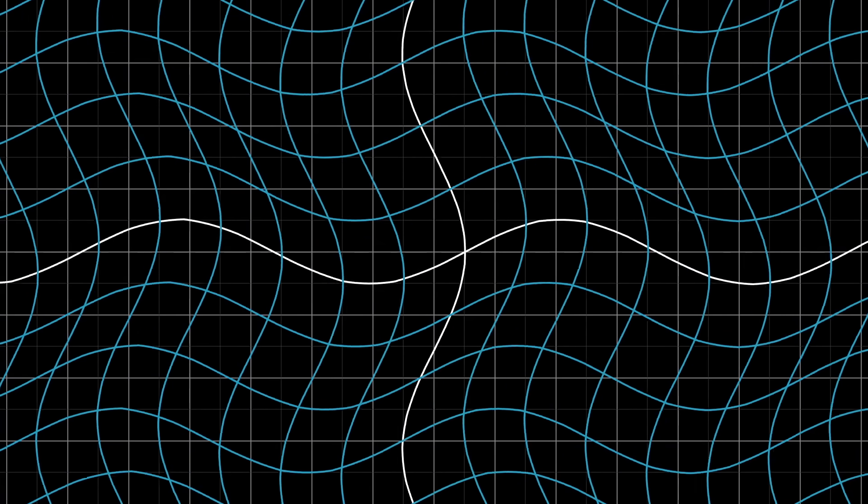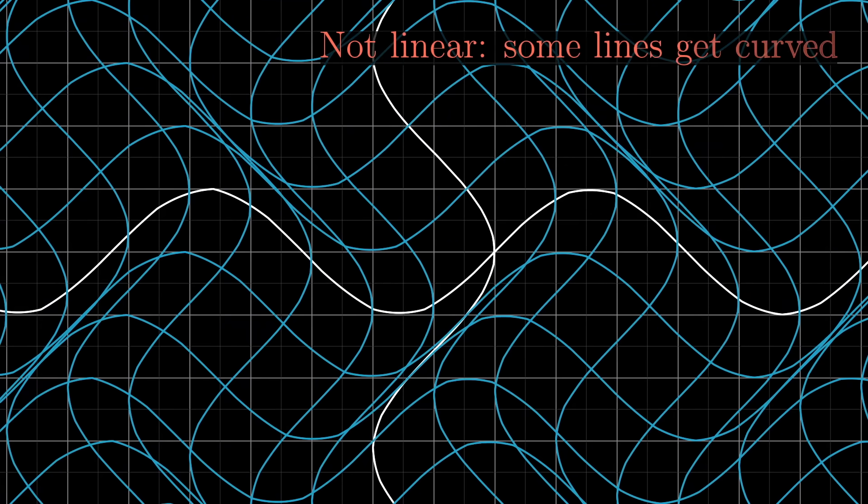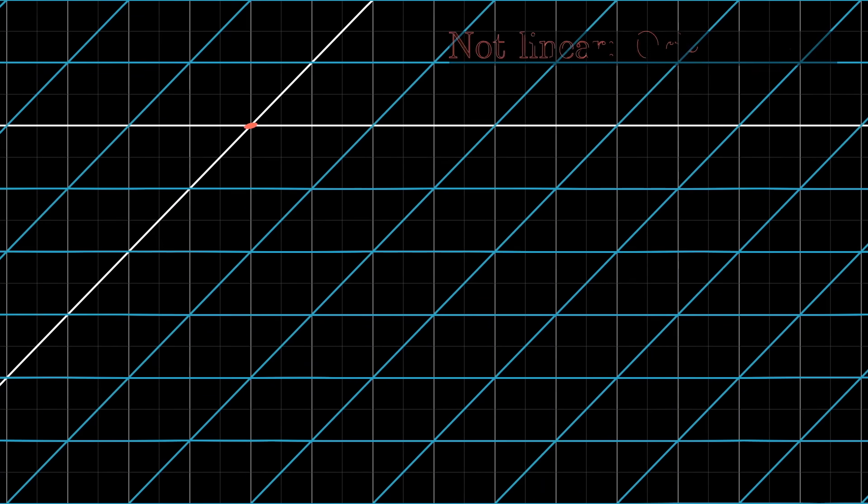For example, this right here would not be a linear transformation, since the lines get all curvy. And this one right here, although it keeps the lines straight, is not a linear transformation because it moves the origin.